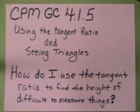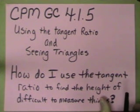how do I use the tangent ratio to find the height of difficult to measure things like flagpoles, cell towers, mountains, buildings, and redwood trees? Anything that is difficult to measure, we can use this for. Now,